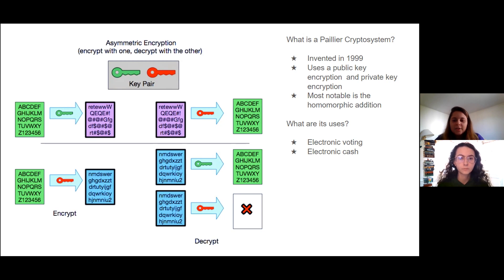In the diagram, you can see the green key is the public key, and the red key is the private key. On the bottom example, the red key is the public key, and with the red key, you cannot decrypt the ABCs.